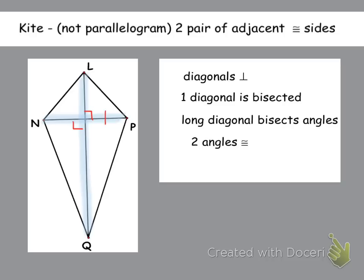So the long diagonal is not obviously bisected, but the long diagonal bisects angles. So bisects angles. So right here and right here, those are going to be congruent. And then down here and here, those are going to be congruent as well. So you have two angles that are congruent. And so your two angles that are going to end up being congruent are these two right here.